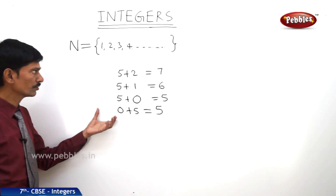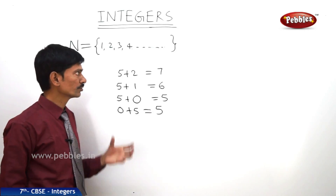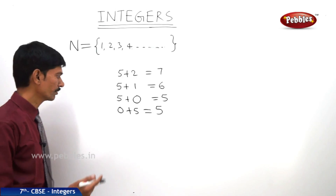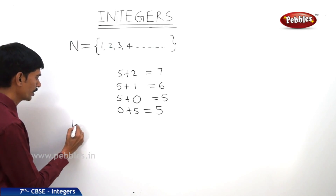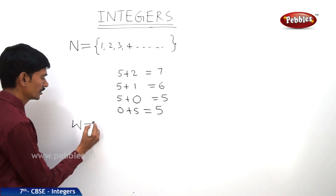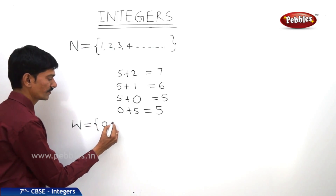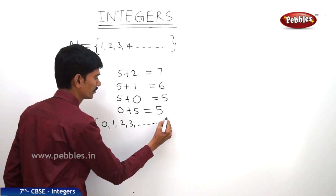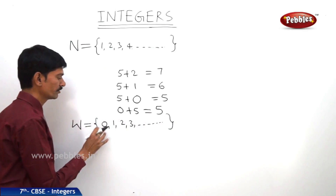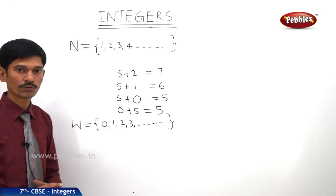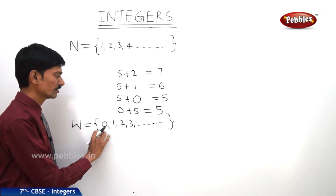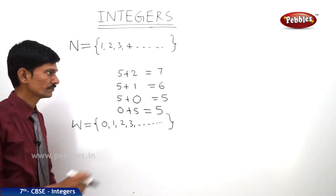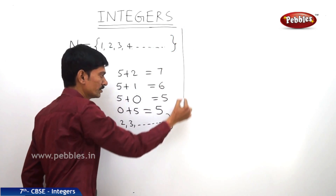If you include 0 in the set of natural numbers, we get another set of numbers called whole numbers. The set of whole numbers is denoted by W: {0, 1, 2, 3, and so on}. The natural numbers together with 0 gives the whole numbers. The smallest whole number is 0 and the smallest natural number is 1.